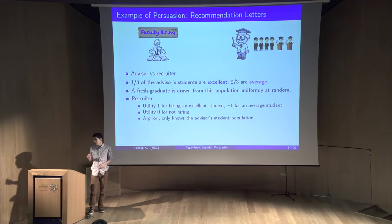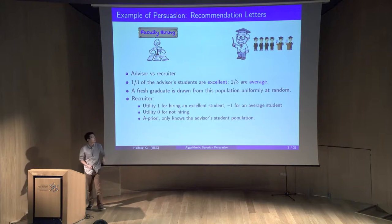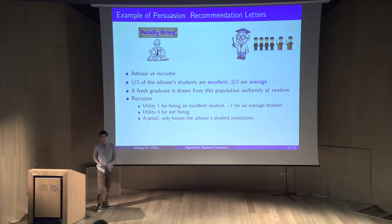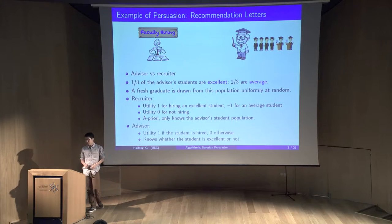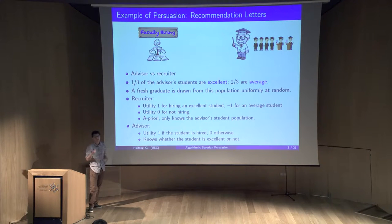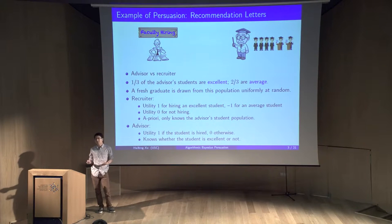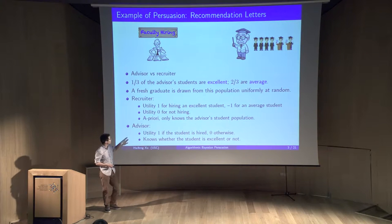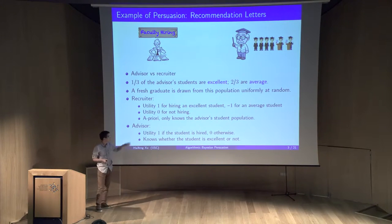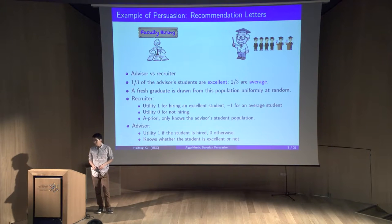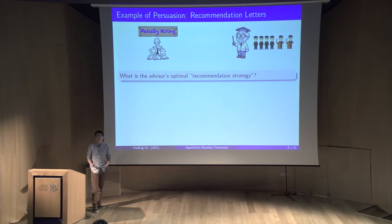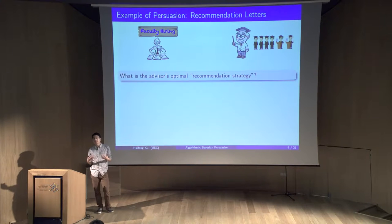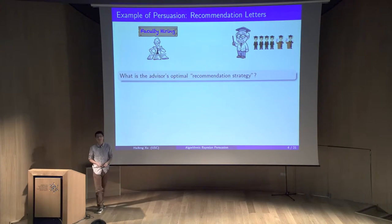A priori, the recruiter only knows the advisor's student population; he doesn't know whether this particular graduate student is excellent or not. The advisor, on the other hand, gets utility one if the student is hired and zero otherwise. The advisor has an informational advantage: he knows whether this particular student is excellent. The advisor has students graduating every year, and he wants to decide a long-term policy about how to write recommendation letters.